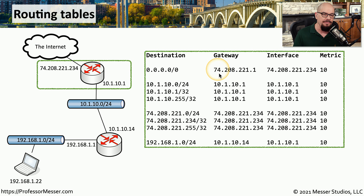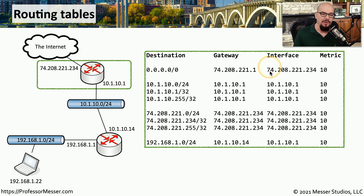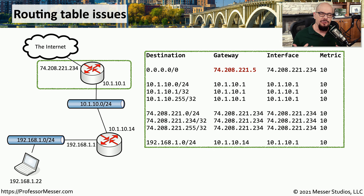This router also has a default route of 0.0.0.0/0, with a gateway at the internet service provider with IP address 74.208.221.1. To reach that next hop, traffic is sent out the interface 74.208.221.234, which is the external connection on this final router. When troubleshooting routing problems, you have to go to every single device that has a routing table and examine it to make sure the flow of traffic is going in the direction you want.